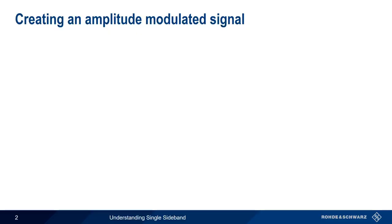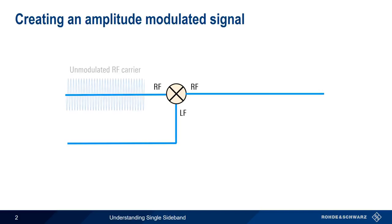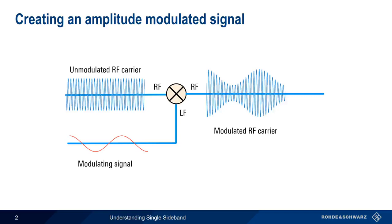Single sideband is a special type of amplitude modulation, so we'll start with a quick review of AM. AM signals are usually created using a mixer, the inputs to which are an unmodulated RF carrier and a low-frequency modulating signal. The result is a modulated RF carrier whose time domain envelope is a copy of the modulating signal.